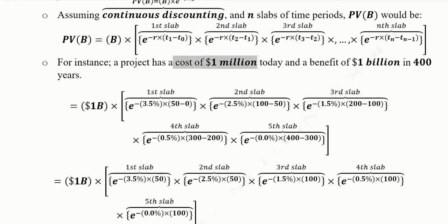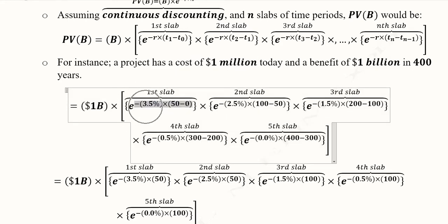Once we are able to convert the present value as per the given discount rates, so the present value benefits is being calculated here. The first slab is here. The discount rate for the first slab was 3.5% and it was for the first 50 years, so here we are 50 minus 0.